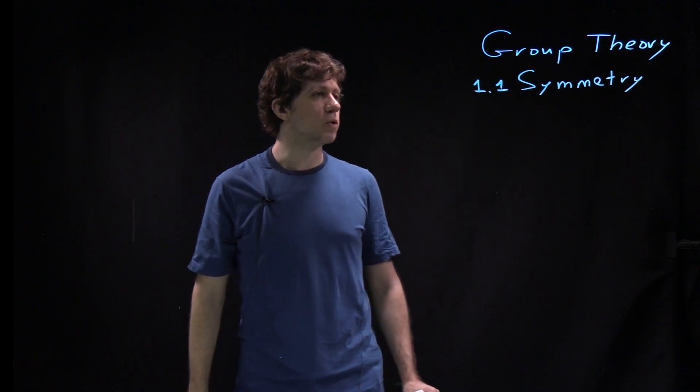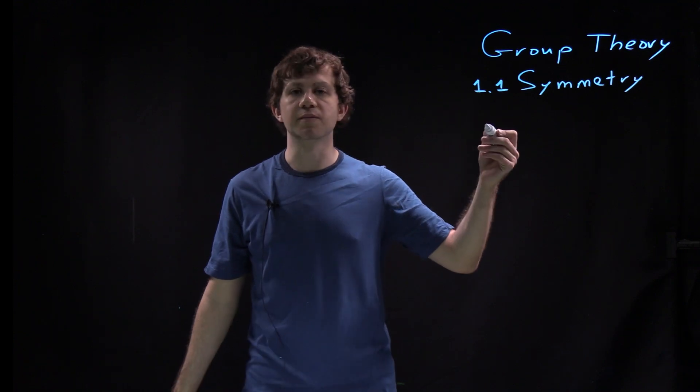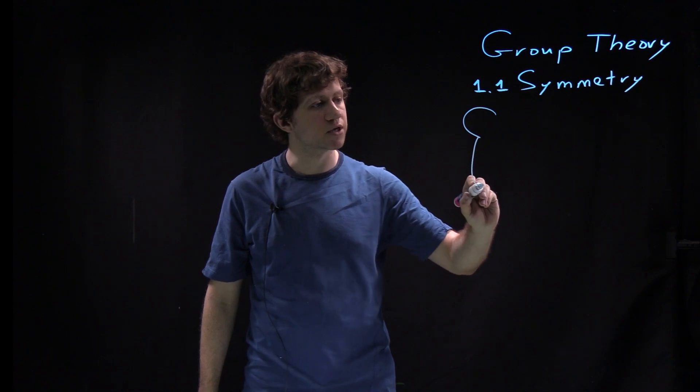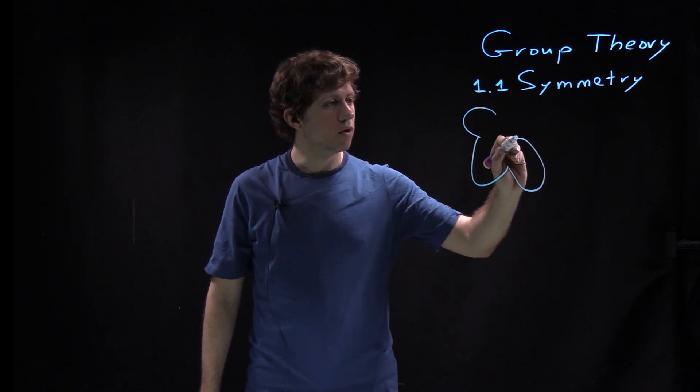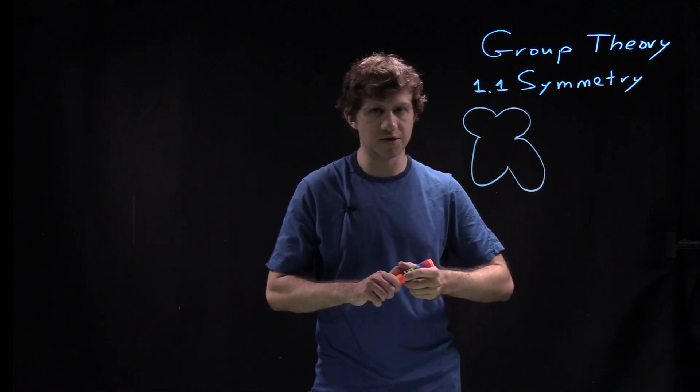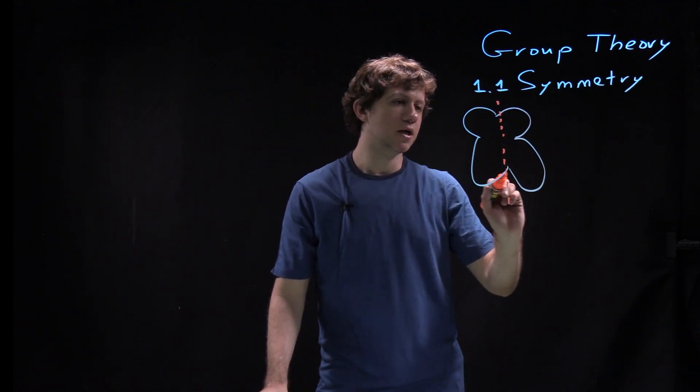So let's start with symmetry. One pretty typical example of an object with symmetry is a butterfly. I will attempt to draw some pictures in the course and this will always be terrible, but excuse me for that. So this is a butterfly.